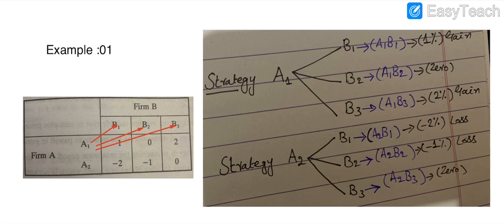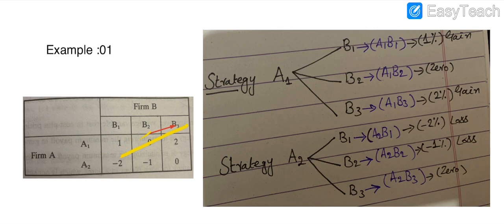Similarly, when Firm A plays strategy A2, the combinations are A2-B1, A2-B2, and A2-B3. You can see from the table: when Firm A plays strategy A1, Firm A gains one percent.